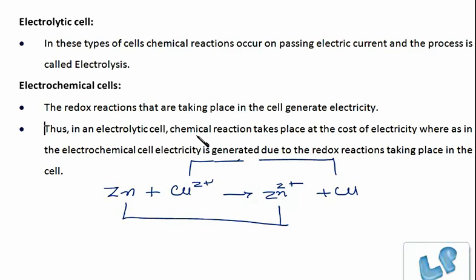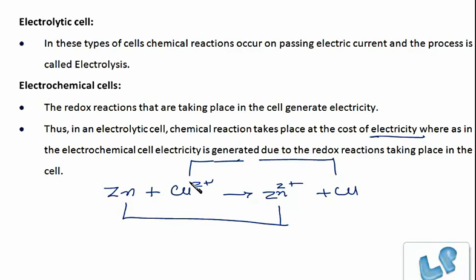Thus, in an electrolytic cell, chemical reactions take place at the cost of electricity. Whereas in an electrochemical cell, electricity is generated due to the redox reactions taking place in the cell. So these are two types of cells.